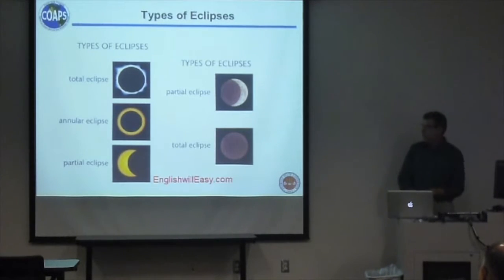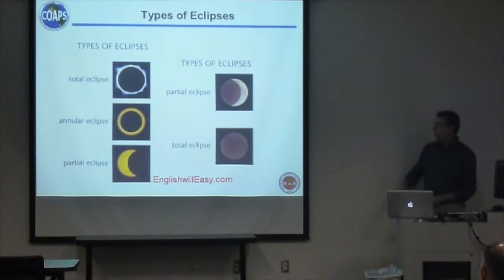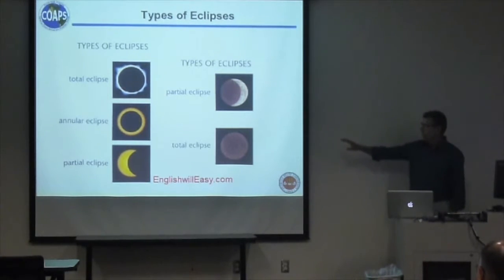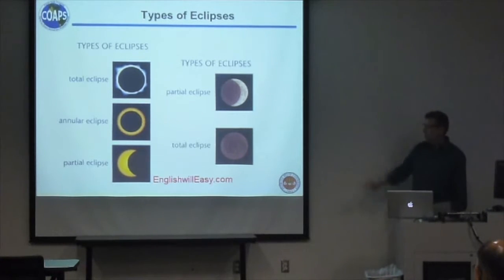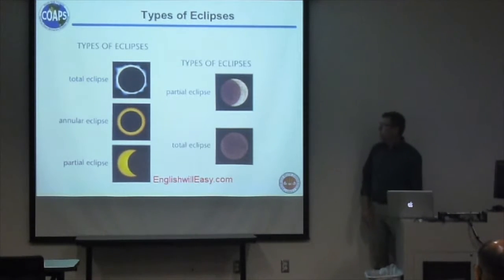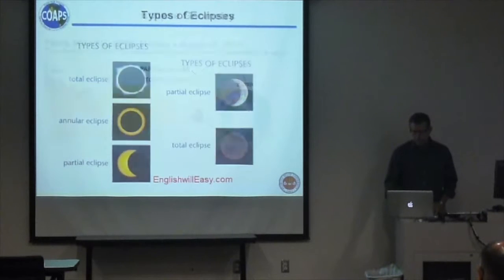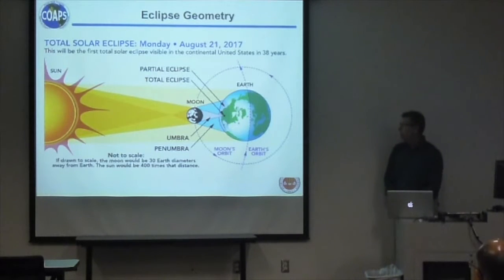Some eclipse basics. There are several different types of eclipses. There's a total eclipse, which we're going to have on August 21st. There's an annular eclipse where the moon doesn't completely cover the sun and you still get some light from the edges, and then there's the partial eclipse. For lunar eclipses, there's only partial and total, because when you get a total eclipse, the Earth is much bigger than the moon, so it can cover it completely.